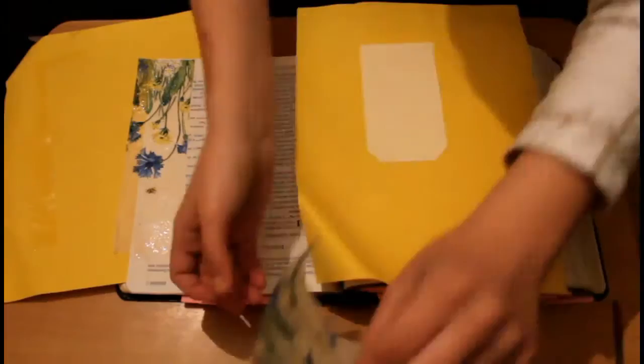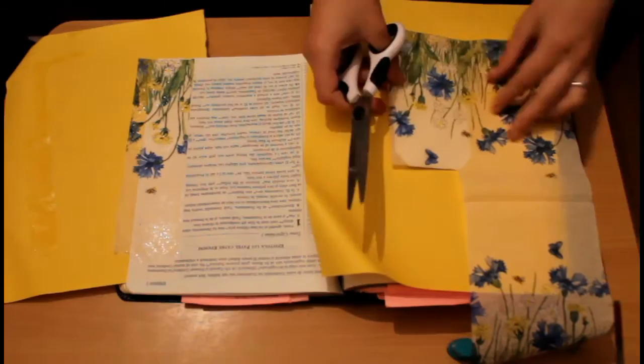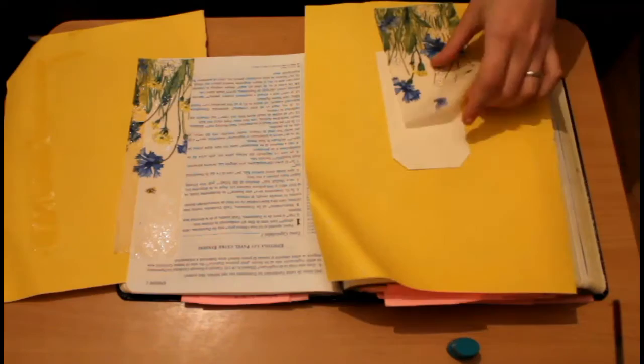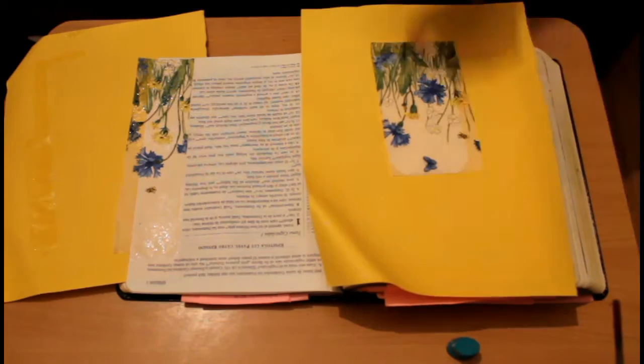For example, in verse 4 we are told that God chose us. Then verse 5, another blessing is adoption. Verse 7: redemption, and also in verse 7: forgiveness of sins. In verse 9, he made known to us the mystery of his will.